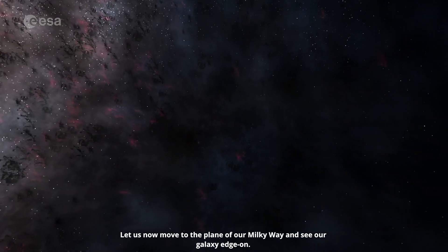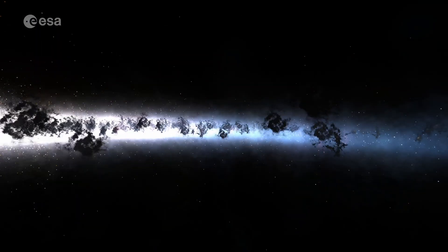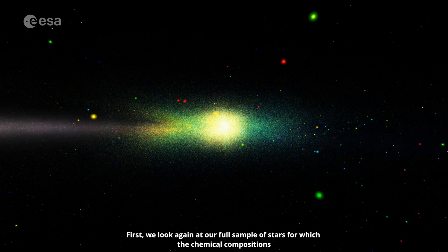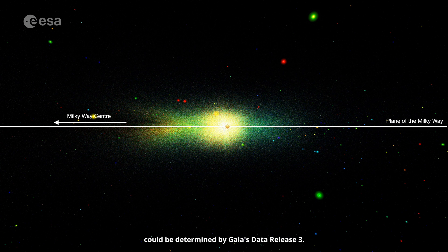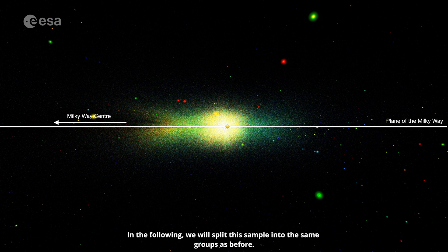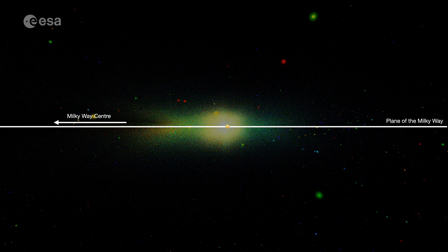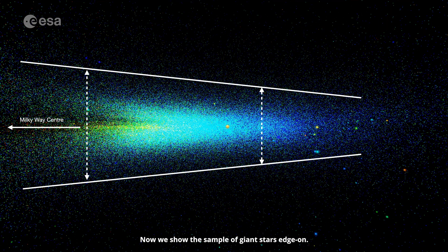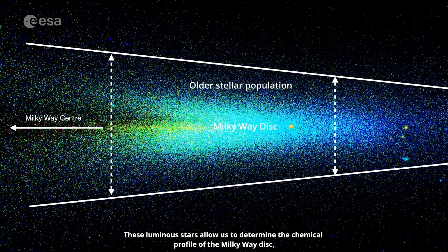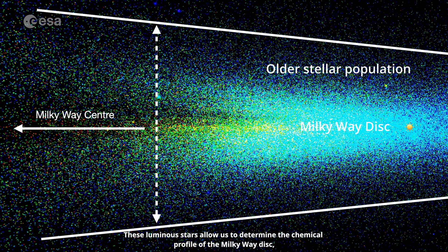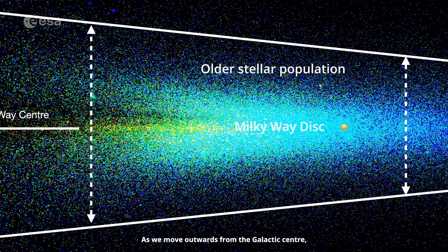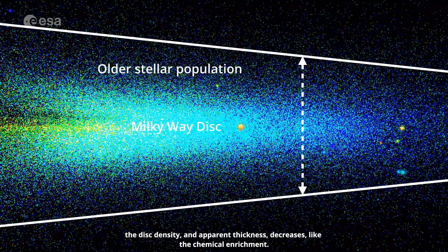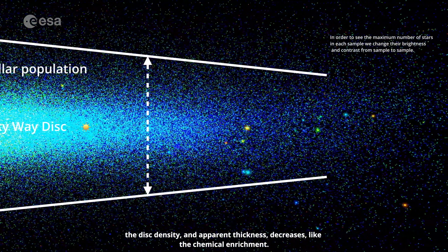Let us now move to the plane of our Milky Way and see our galaxy edge on. First, we look again at our full sample of stars for which the chemical compositions could be determined by Gaia data release 3. Now we show the sample of giant stars edge on. These luminous stars allow us to determine the chemical profile of the Milky Way disk, including its older stellar populations, far from the galactic plane. As we move outwards from the galactic centre, the disk density and apparent thickness decreases, like the chemical enrichment.